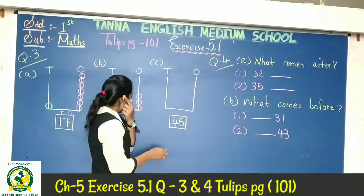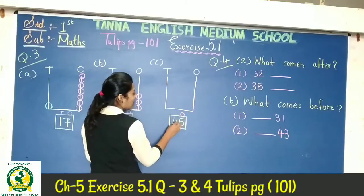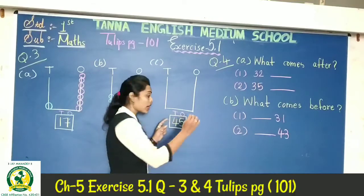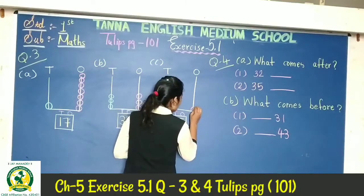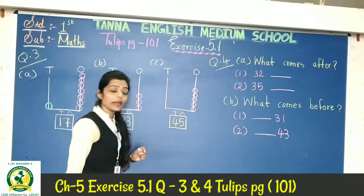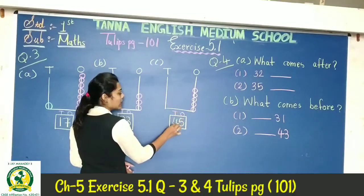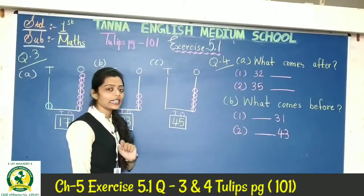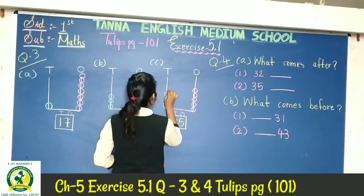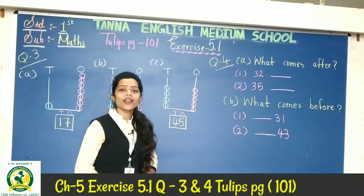Again this is a 2-digit number. Here 5 is in the ones place and 4 is in the tens place. So for the ones place we draw: 1, 2, 3, 4, and 5. For the tens place we draw: 1, 2, 3, 4. So the number is 45 — 4 in the tens place, 5 in the ones place.